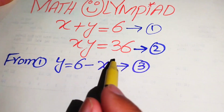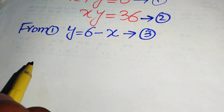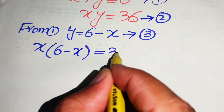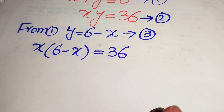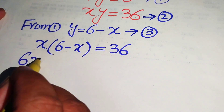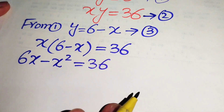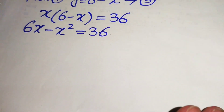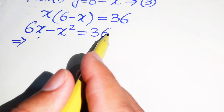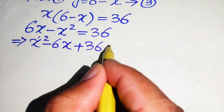Now we substitute the value of y into equation number 2, which is x times y equals 36. So the value of y is 6 minus x, giving us x times (6 minus x) equals 36. We multiply x through and get 6x minus x squared equals 36. Rearranging, we get x squared minus 6x plus 36 equals 0.